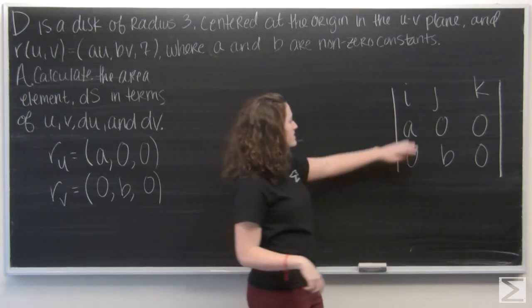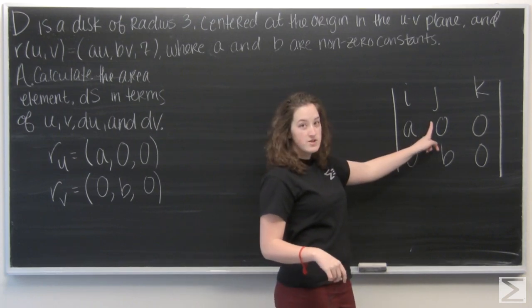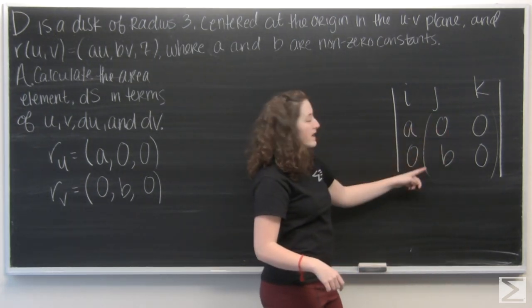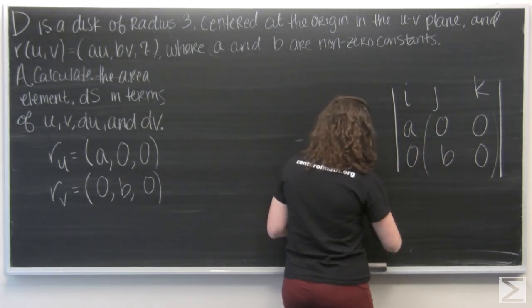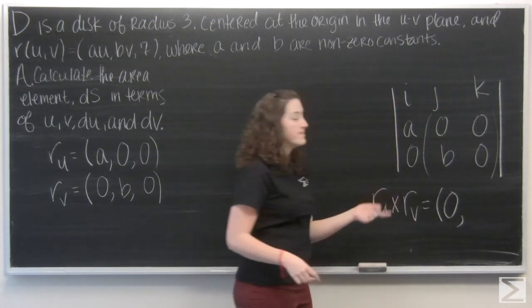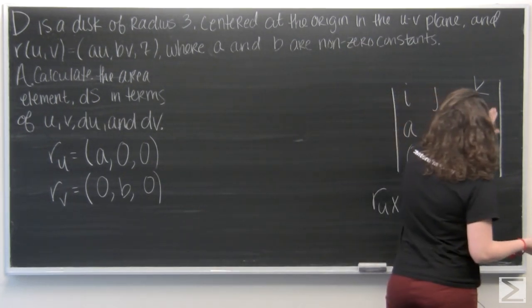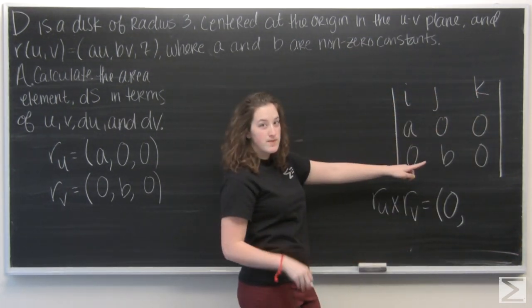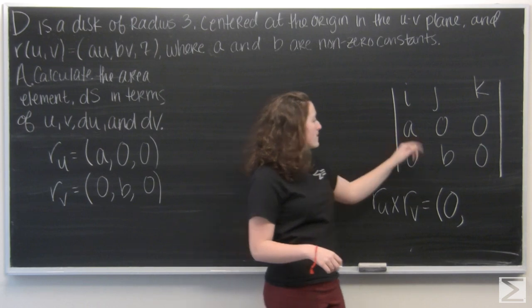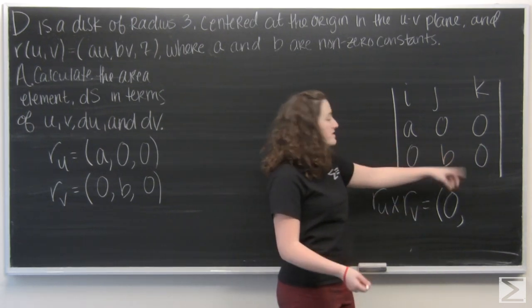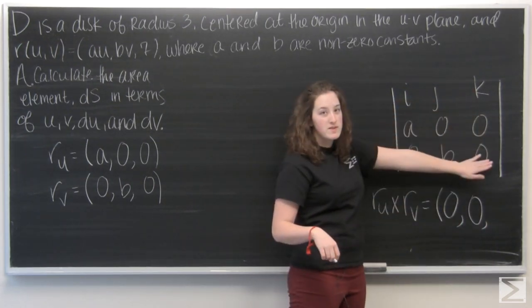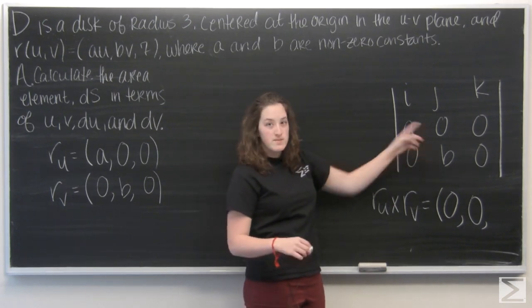Okay, so let's look at i first. So cover this column and I'm taking the determinant of this two by two matrix. So 0 minus 0. Okay, now let's do j. This time I'm going to ignore the middle column. And I'm going to be taking the determinant of the two by two matrix, a, 0, 0, 0. So I'm actually going to get 0 again. a times 0 is 0, minus 0. Now let's look at k. So I'm going to cover up that third column. And I'm going to have a times b, minus 0.